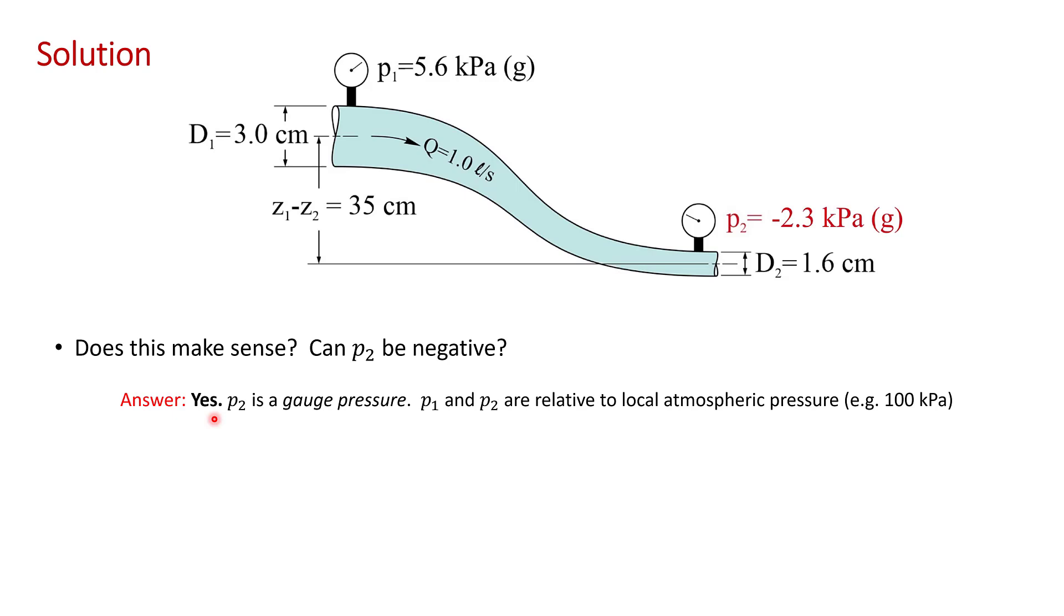As I mentioned, the pressure has decreased because the kinetic energy at the outlet has increased. And yes, the outlet pressure can be negative.